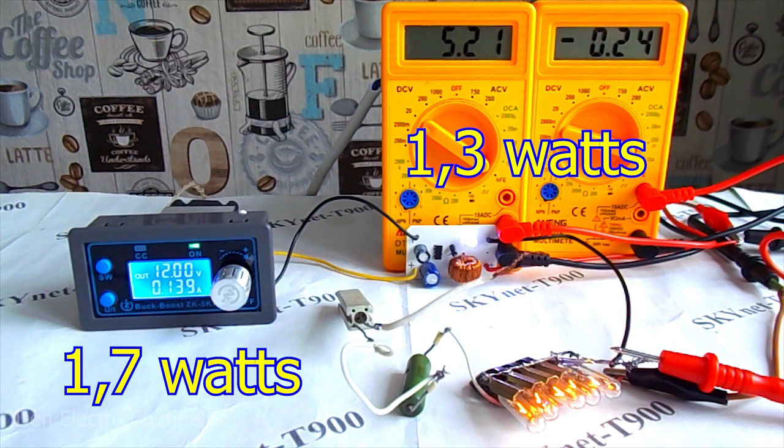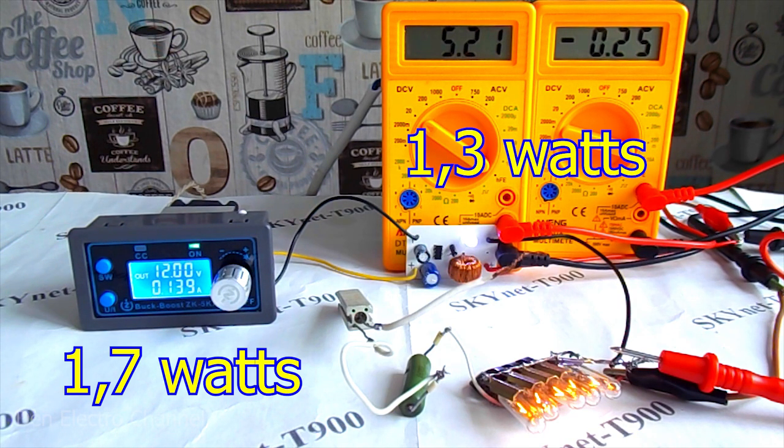At the input at 12 volts, the current is 139 milliamps. Converter efficiency is approximately 76%.